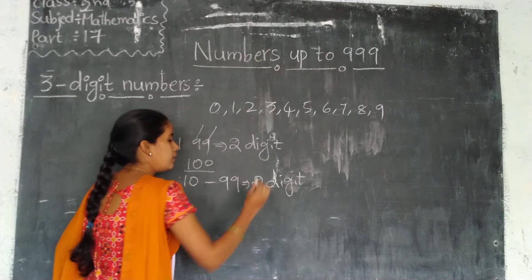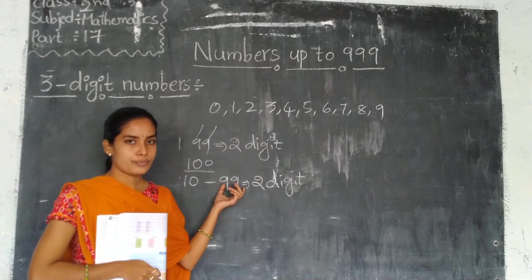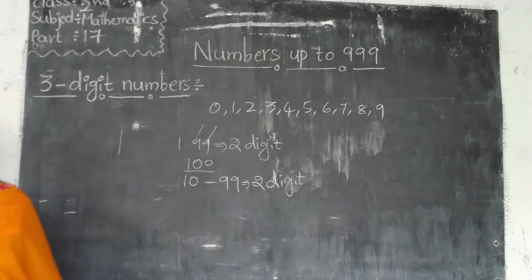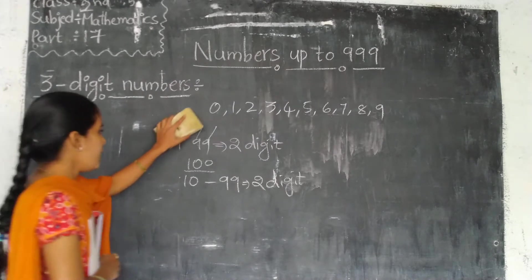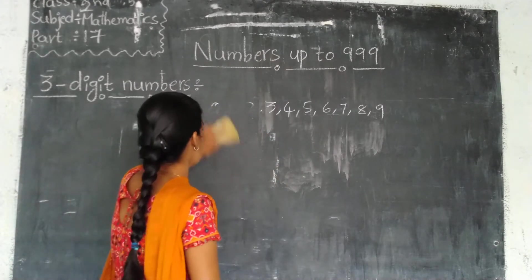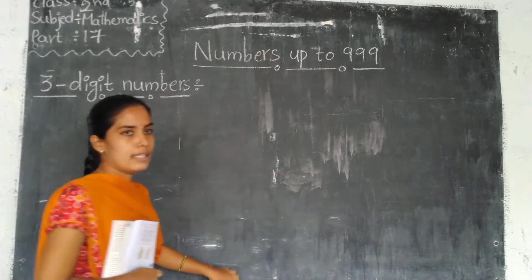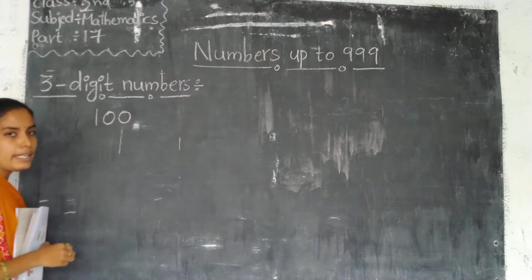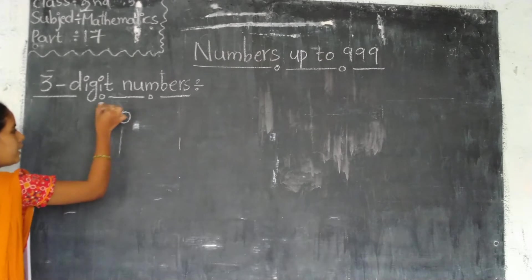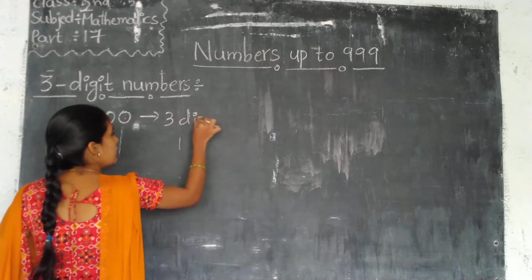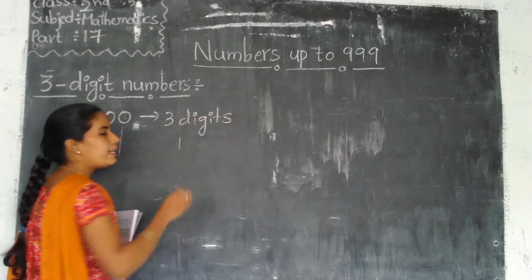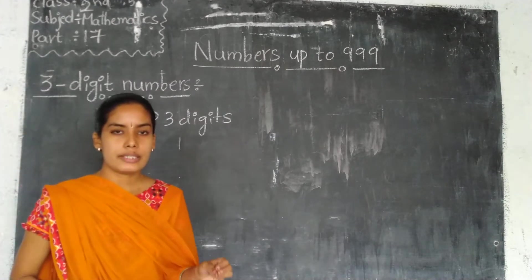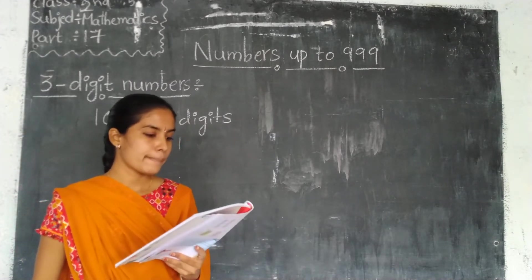So after 99 we don't know. What is the next number after 99? That is 100. Very good! So 100 — how many digits does it have? 1, 2, 3 — there are 3 digits in 100. So in this chapter we will discuss 3-digit numbers.